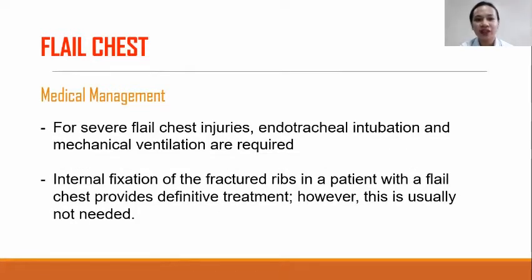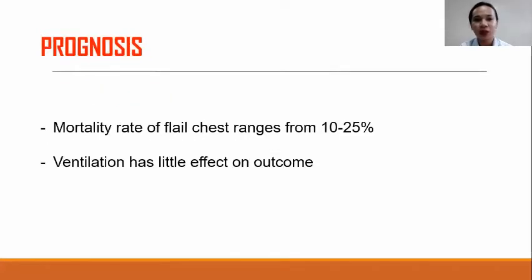For severe flail chest injuries, endotracheal intubation and mechanical ventilation are required to provide internal pneumatic stabilization of the flail chest and to correct abnormalities in gas exchange. Internal fixation of the fractured ribs provides a definitive treatment; however, this is usually not needed. Prognosis: mortality rate of flail chest ranges from 10% to 25%. Ventilation has little effect on outcome.